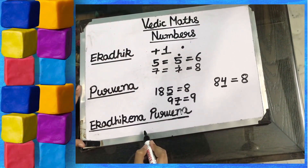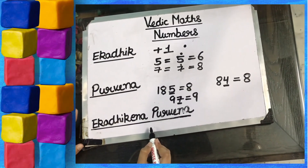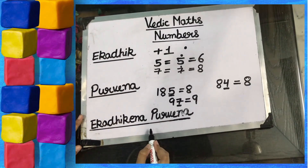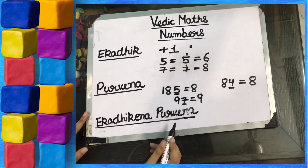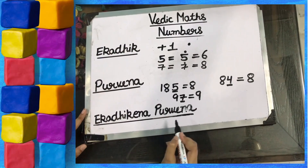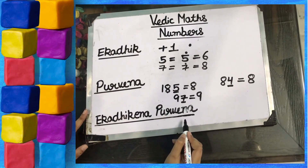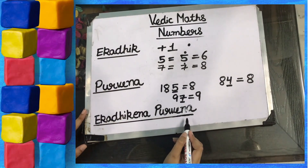The third term is Ekadiken Purven. Ekadiken Purven means plus 1 in the previous digit.